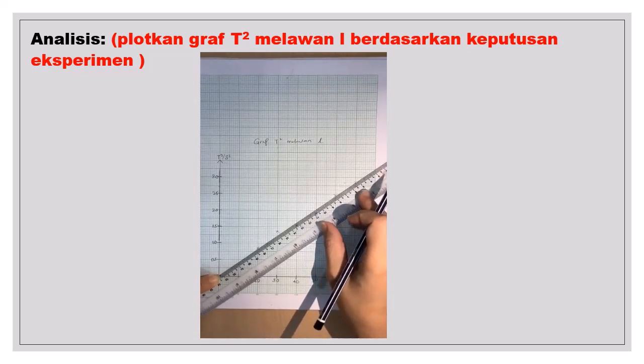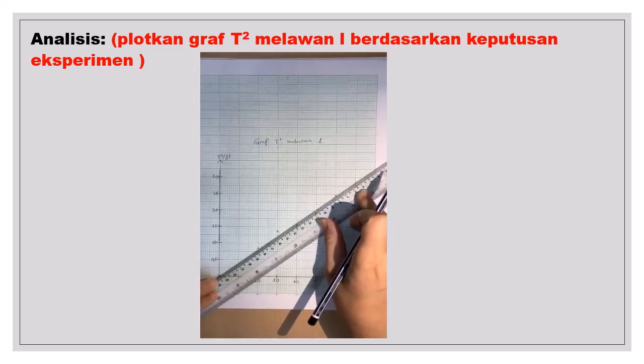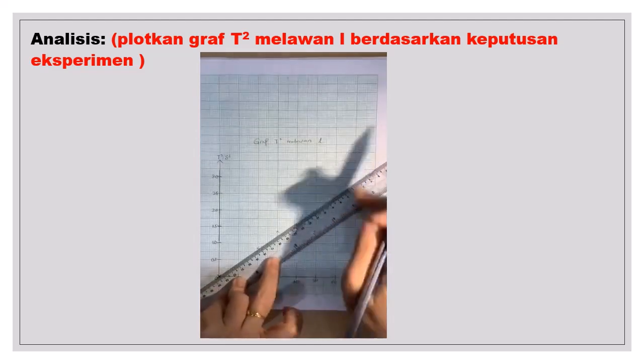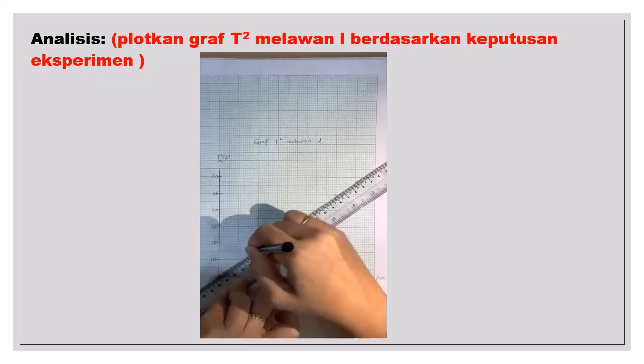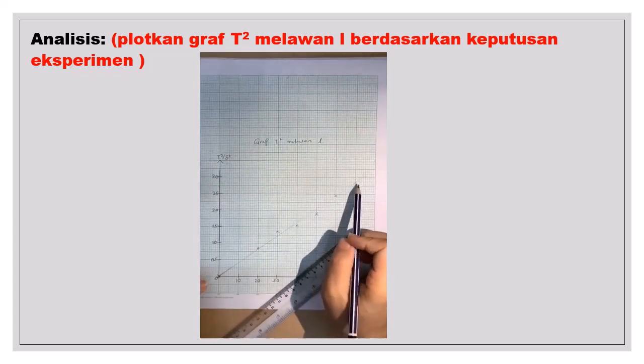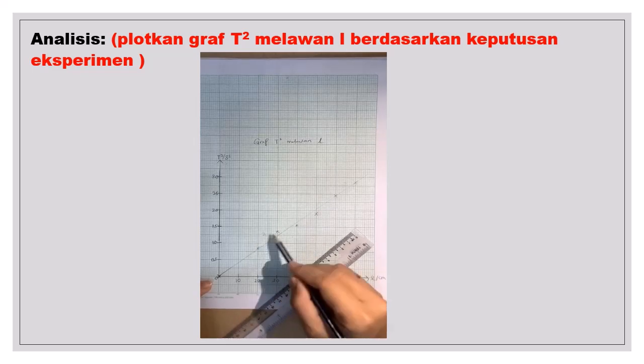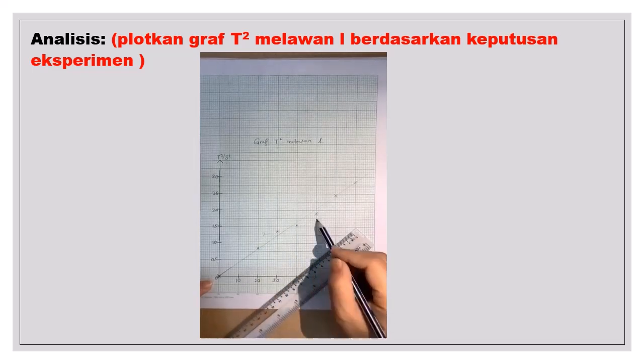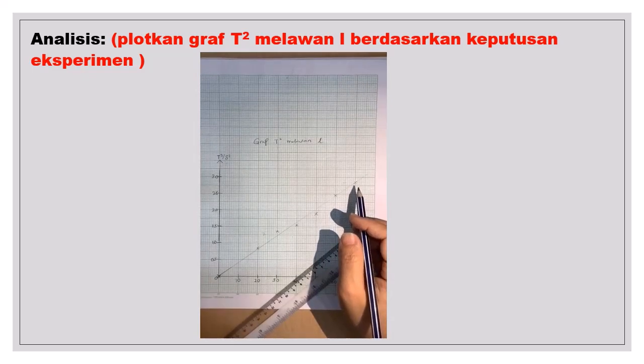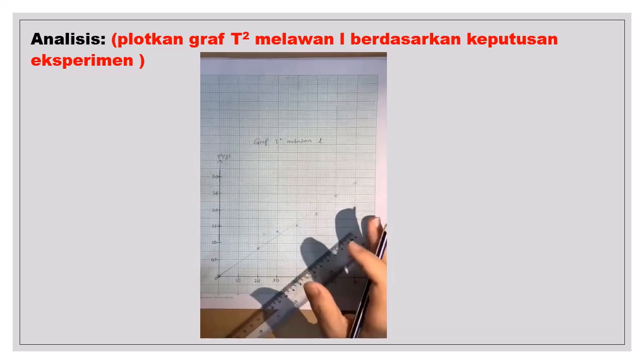Katakan saya pilih titik ini. Saya pilihkan titik yang paling tengah ini. Kalau saya melalui dua titik ini. Ada dua titik di atas. Satu, dua. Dua titik di bawah. Dia melalui dua titik. Jadi, yang ada empat titik yang tidak dilalui oleh garisan. Tetapi dua di atas, dua di bawah. Maksudnya, ia adalah seimbang.